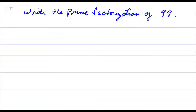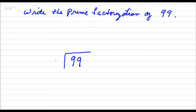So the way you want to start this out, 99 is not evenly divisible by 2, so you go to the next number, which is 3. 99 divided by 3? 33.